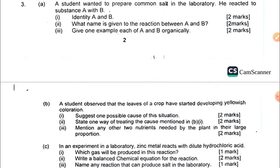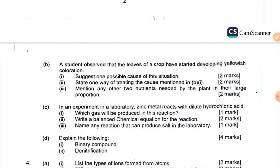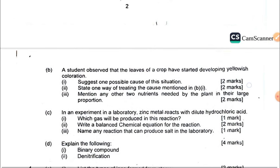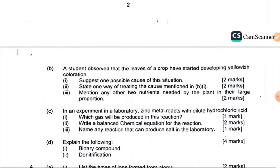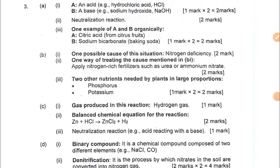Question 3a has to do with a student preparing common salt in the lab. Question 3b has to do with yellow coloration of leaves. Question 3c involves an experiment where a metal reacts with hydrochloric acid. Question 3d asks for definitions of binary compound and denitrification.